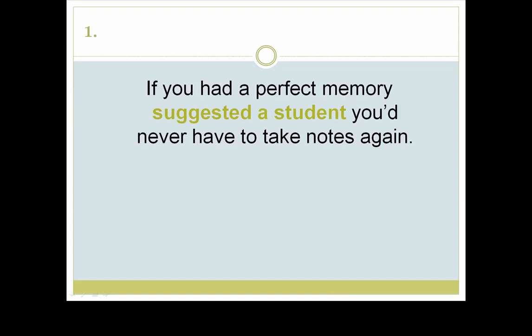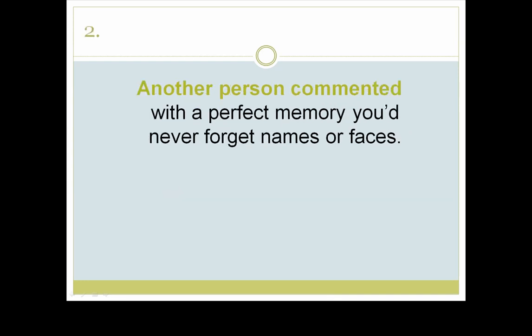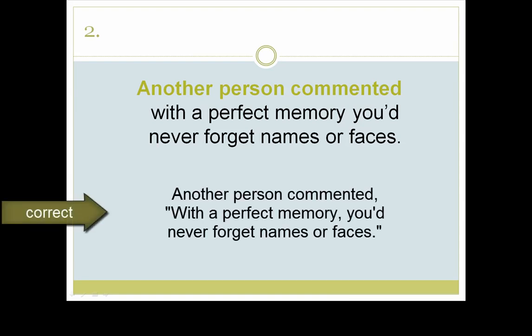Exercise one answer: 'If you had a perfect memory,' suggested a student, 'you'd never have to take notes again.' Look closely at the placement of the commas, and make sure that the 'y' in 'you'd' is not capitalized. Exercise two answer: Another person commented, 'With a perfect memory, you'd never forget names or faces.' Be sure you have that first comma placed before the quotation marks. The direct speech begins with a capital letter, W. Many writers would choose to place a comma after 'memory' to set off that introductory phrase.